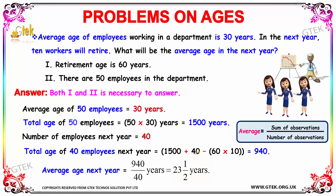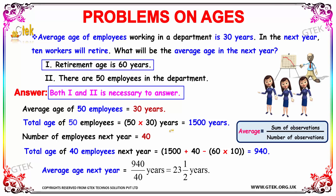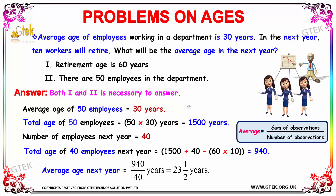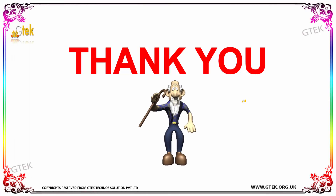Thus, both the first and second statements are necessary to find the answer, as we used both in our calculation. These questions are similar to data sufficiency questions and are important. Thank you so much for joining GTech on problems on ages — hope you had fun solving the problems.